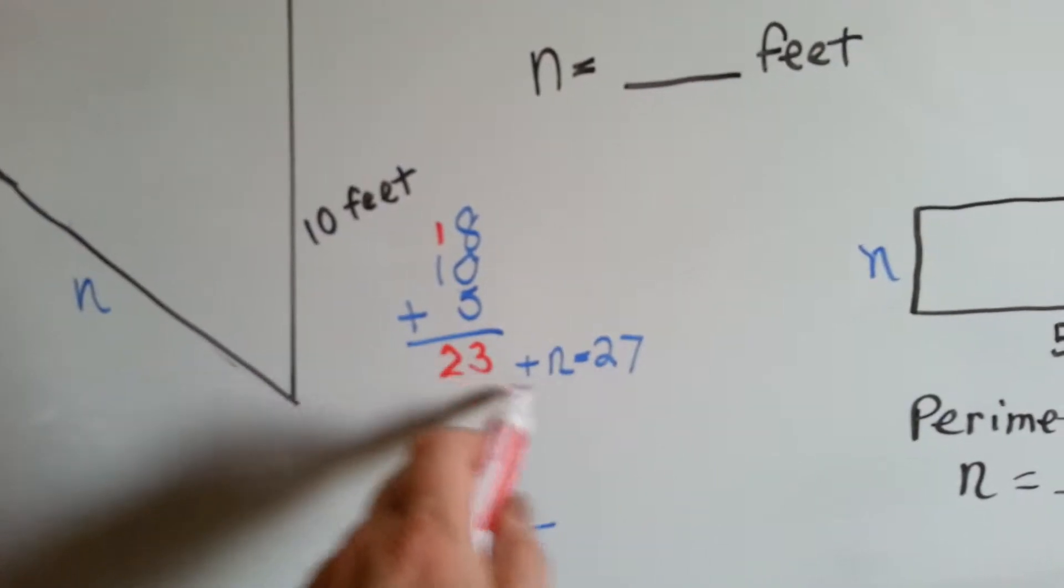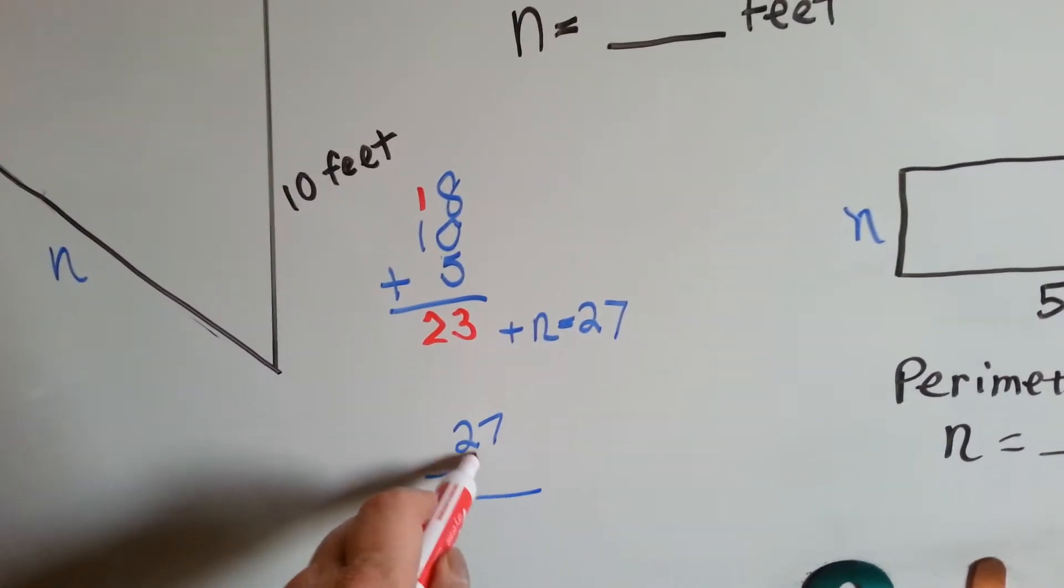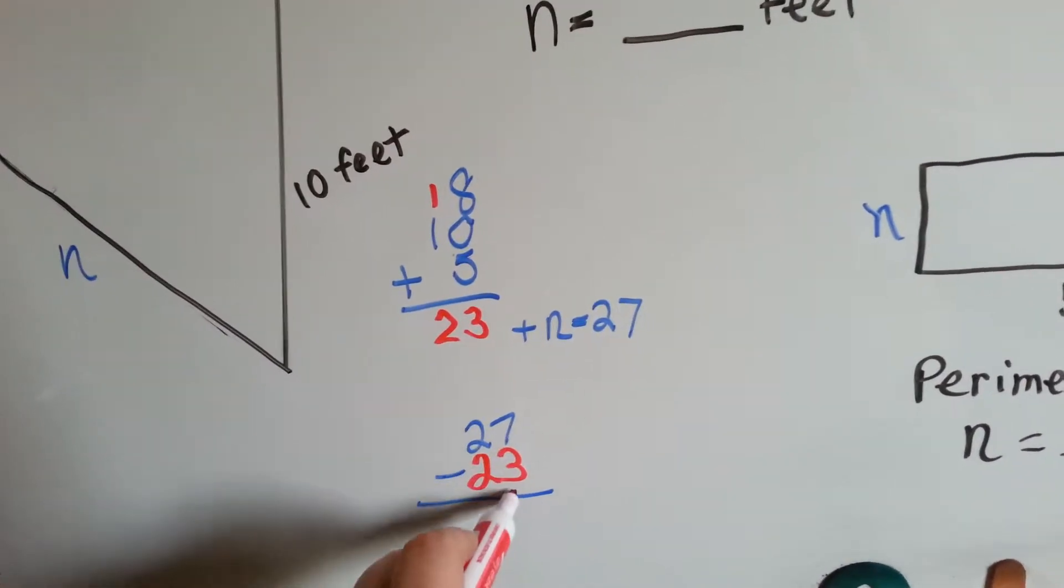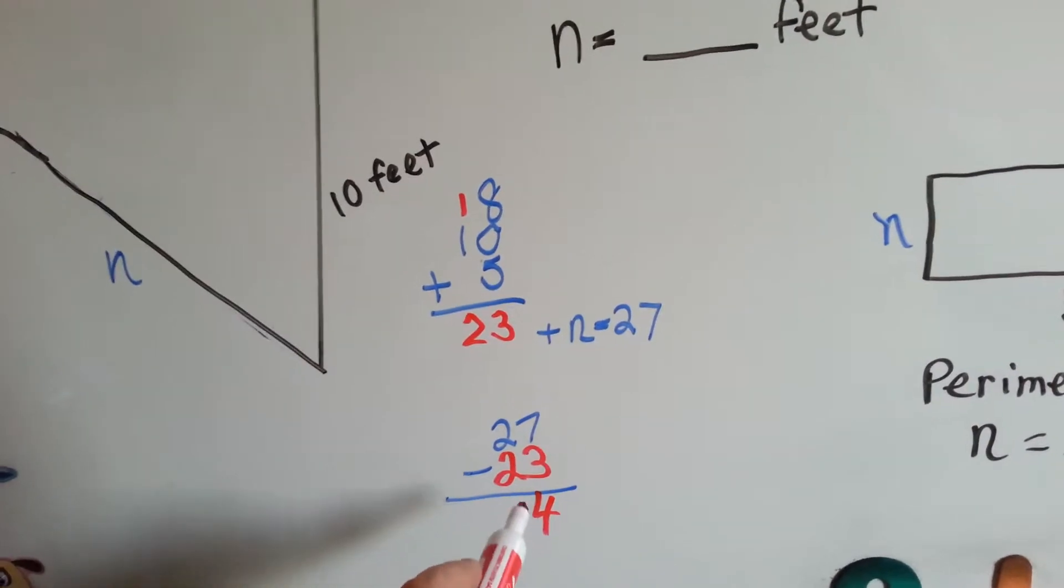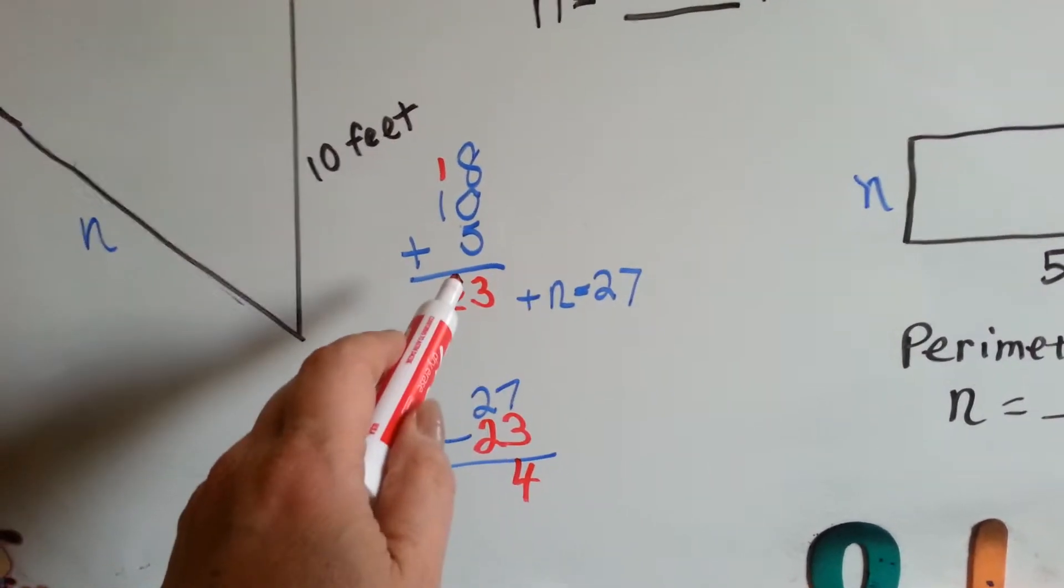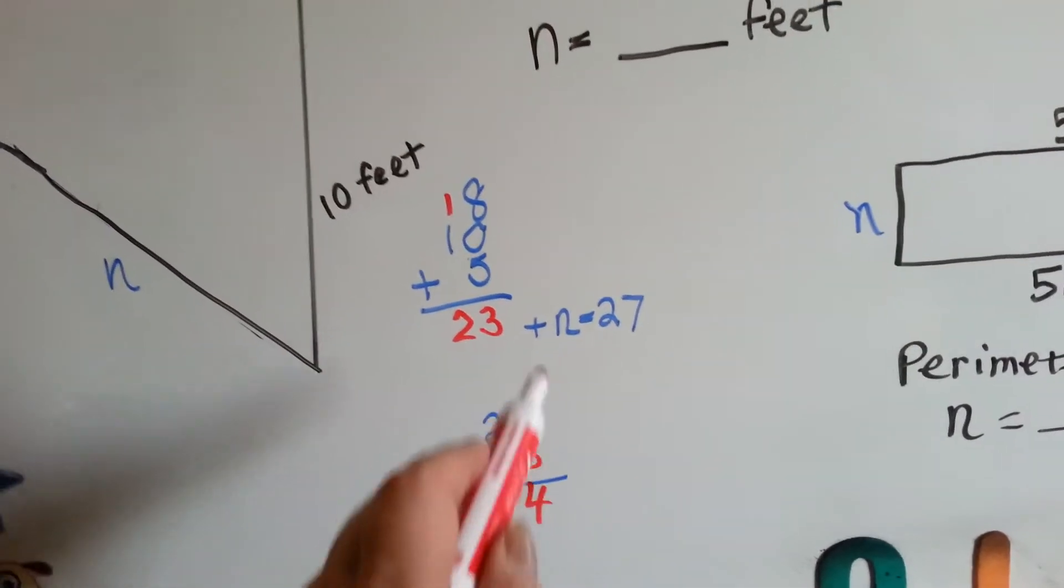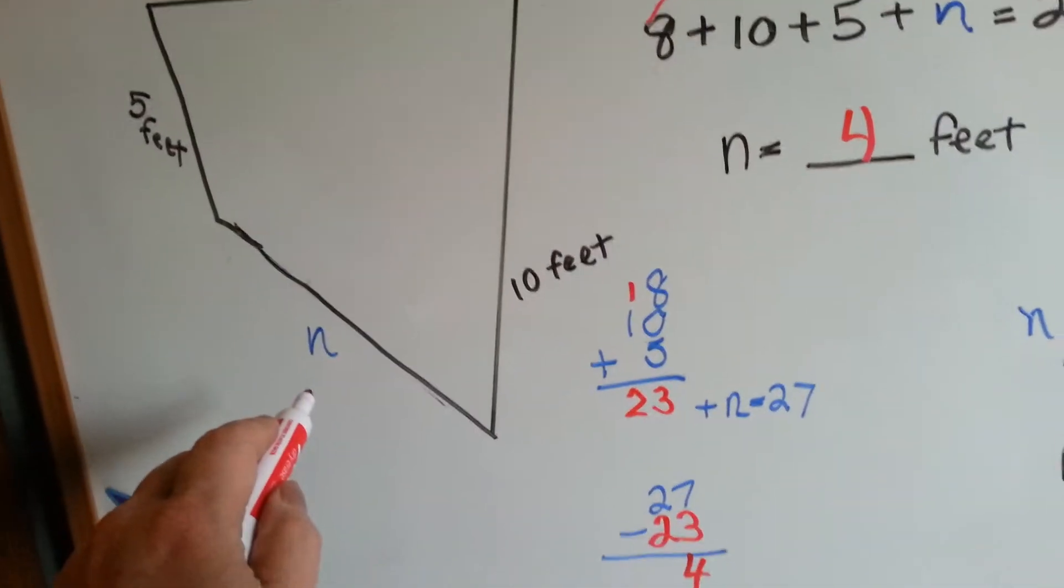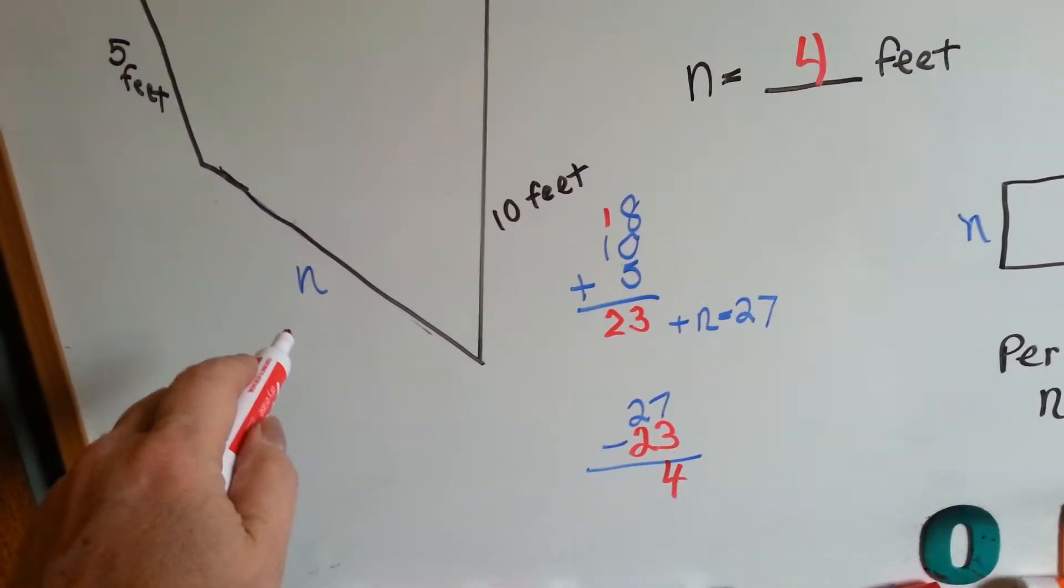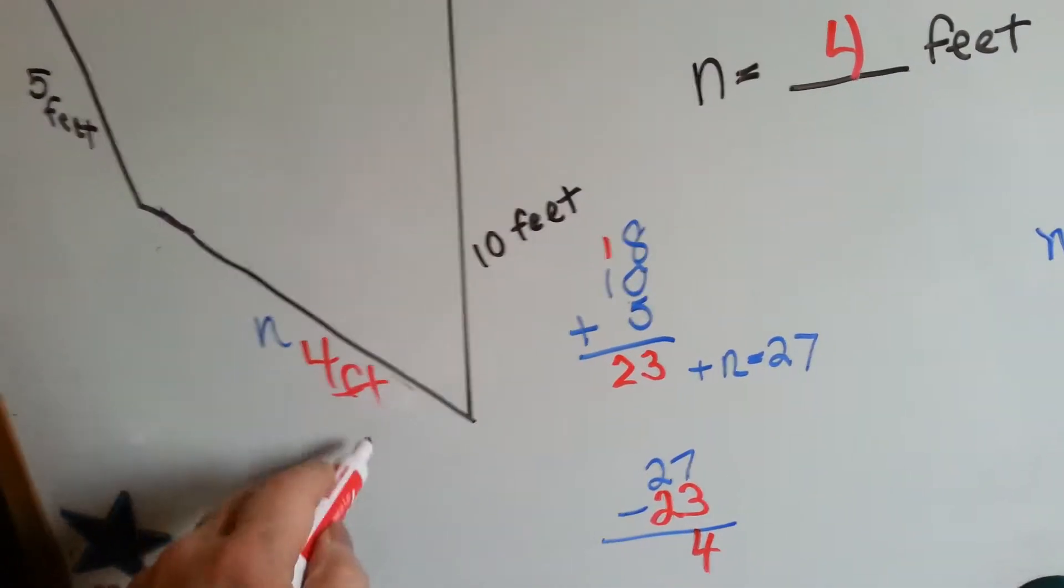So let's do subtraction. 27 minus this number 23. 7 take away 3 is 4. And that's 0, so that leaves 4. So 23 plus 4 equals 27. n equals 4. So n equals 4 feet. See how we did that? That means that this side would have to be 4 feet.